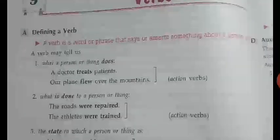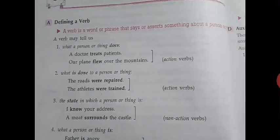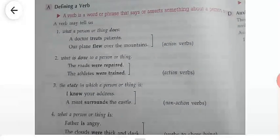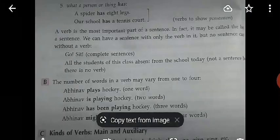Hello students. As we have already begun this chapter on verbs, we will continue with recapitulation. Verbs are the words that show action. Action-showing words are known as verbs. There are certain types: what a person does, what is done to a person, the state in which a person or thing is, and what a person or thing has.